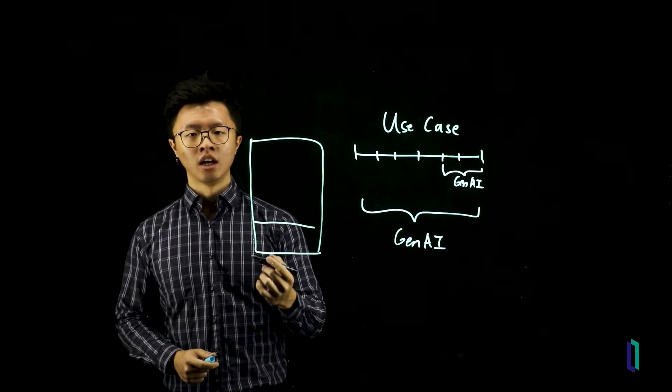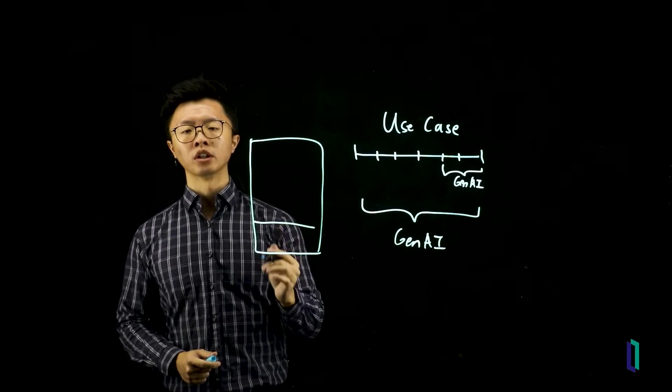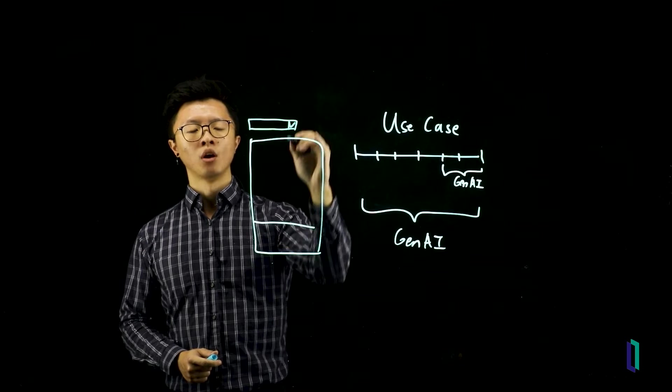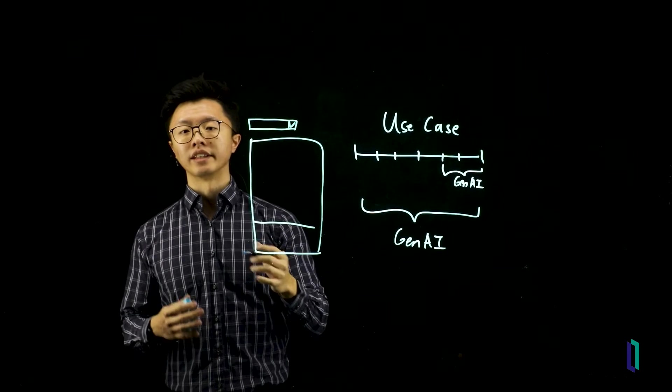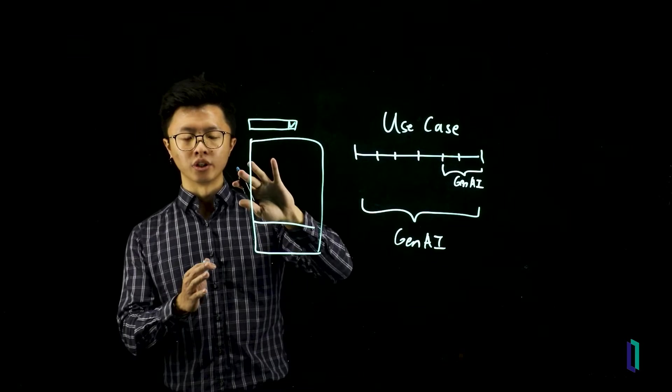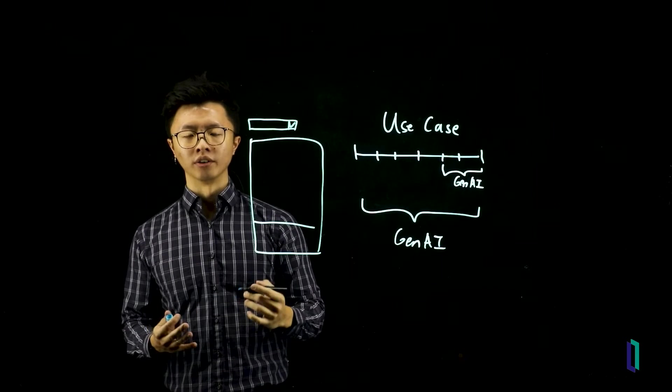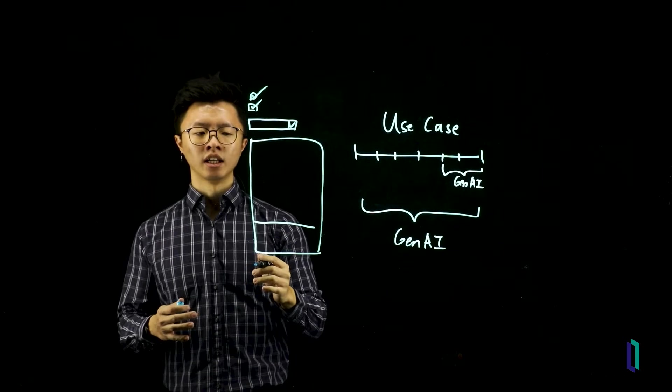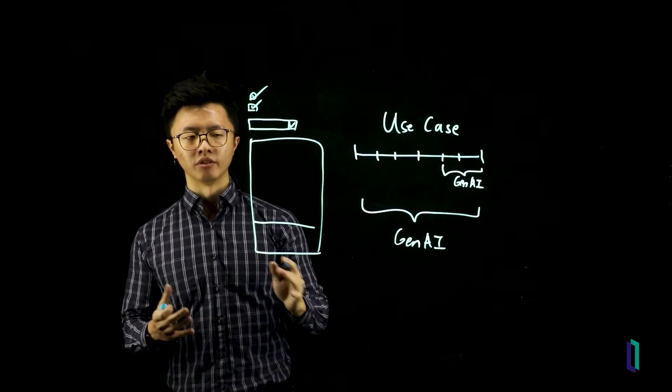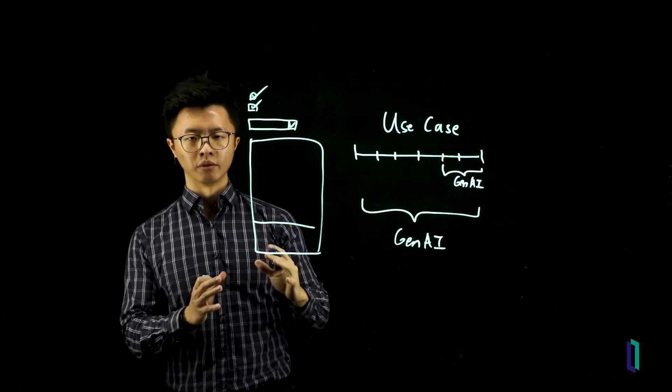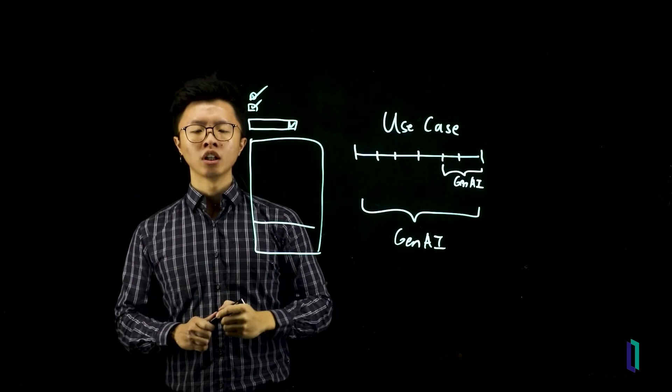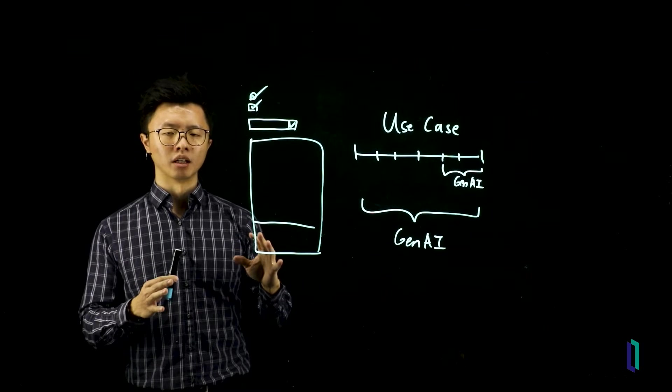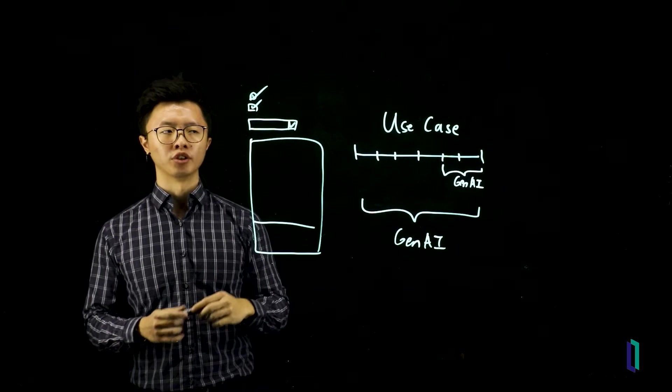Some ways that you can think about how to constrain this problem would be to include a drop-down menu, for example, where a user can perhaps pick the data source he wants this user interface to do RAG on. You could also put in different options that will help you implement a different prompt, for example, in your RAG system and further constrain the problem. Overall, constrain the problem and really understanding where Gen AI comes in will help you effectively solve your use case.